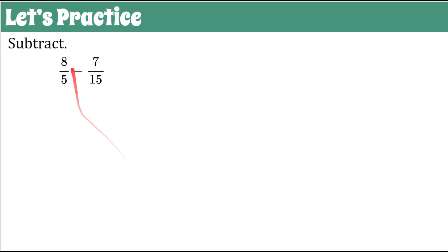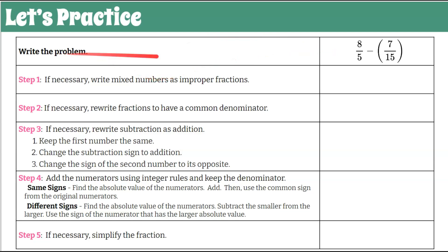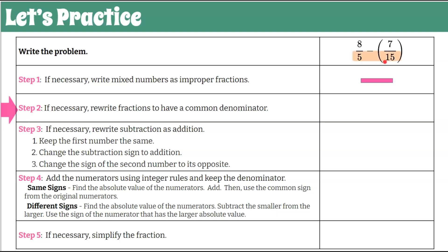Here is our graphic organizer. We're going to practice. We're going to subtract 8 fifths minus 7 fifteenths. So this is what would be presented to you. Now let's put it on our graphic organizer to organize our work, and always show all five steps if they're necessary. Step 1, write mixed numbers as improper fractions — that's not necessary here, they're already fractions. Step 2, rewrite to have a common denominator. Our denominators are 5 and 15 — not common, but 5 is a factor of 15. Multiply 5 by 3 to get 15, and do the same to the numerator: 8 times 3 is 24, all over the common denominator of 15. Bring down the subtraction sign and the second value, 7 over 15.